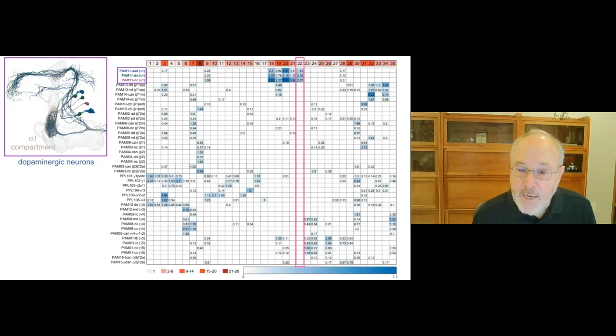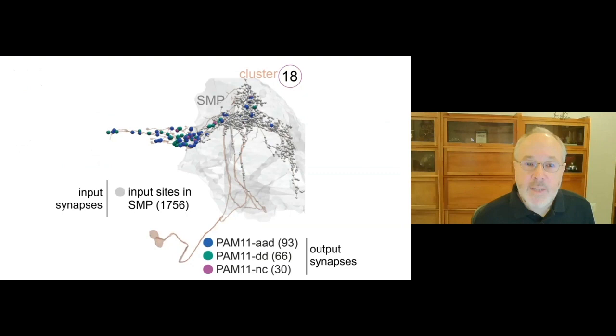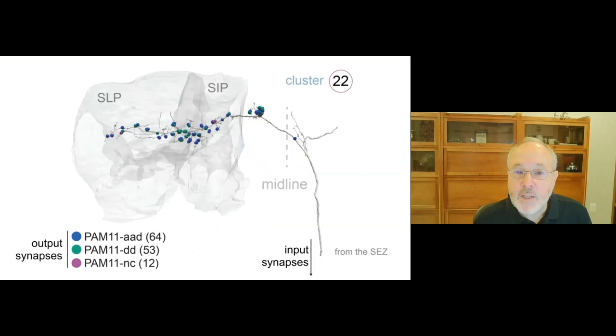However, these classes, although dedicated to these same dopamine neurons, provide very different types of information. Class 18 provides information from a dorsal brain area called the SNP. Class 22 neurons provide information from the SEZ and thus are likely to relay information about what the fly is tasting.